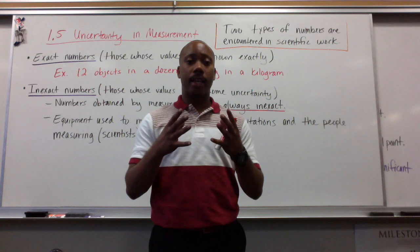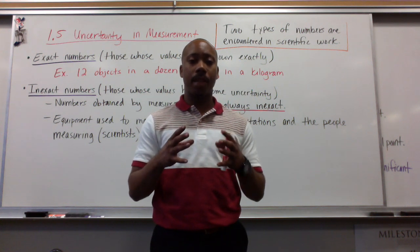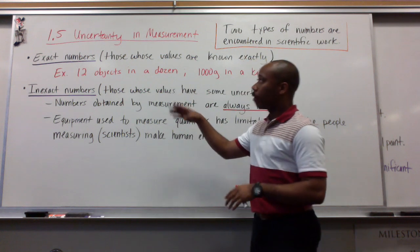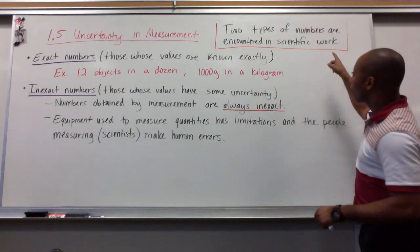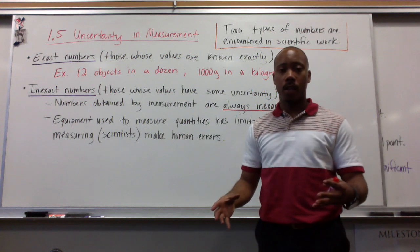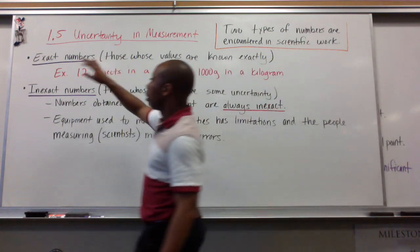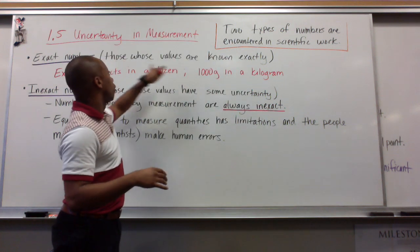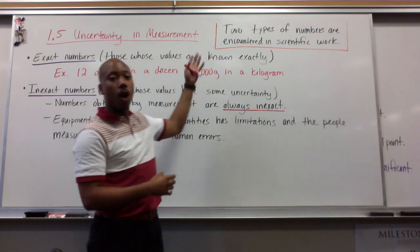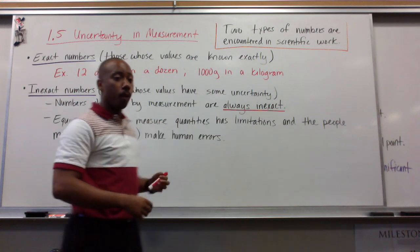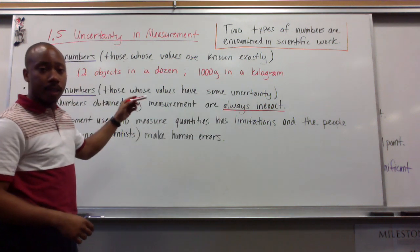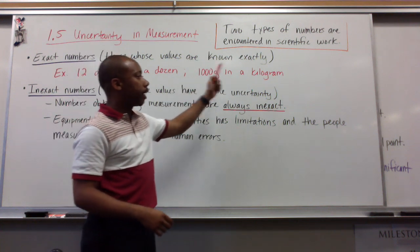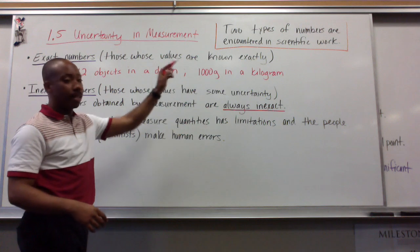So when making measurements of anything in a science classroom, we have to remember that we're dealing with numbers. Section 1.5 is going to highlight that there are two types of numbers encountered in scientific work. One type are exact numbers — those numbers whose values are known exactly. For example, we know that there are 12 objects in a dozen, and 1,000 grams in a kilogram. That is definite, that is known, it is exact.